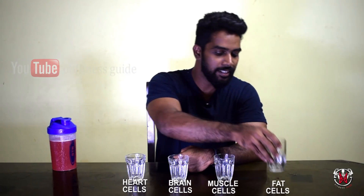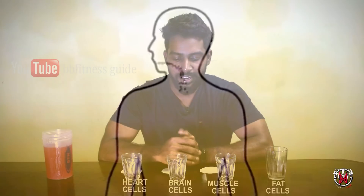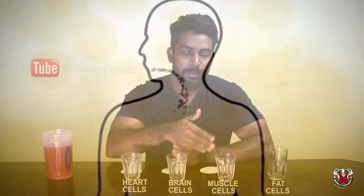We have four types of body cells: heart cells, brain cells, muscle cells, and fat cells. These are the cell types involved in how our body calculates and uses energy.